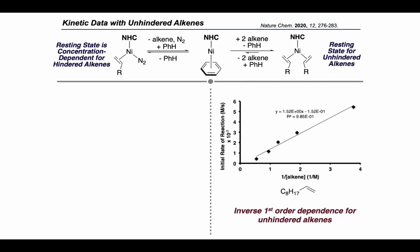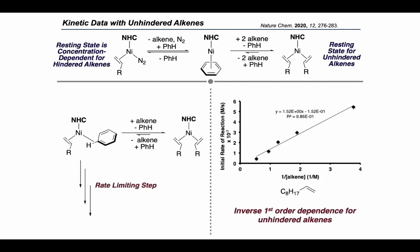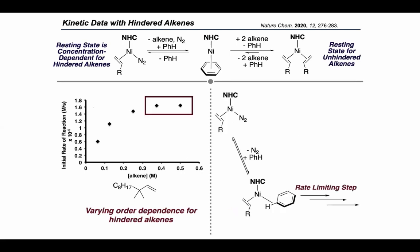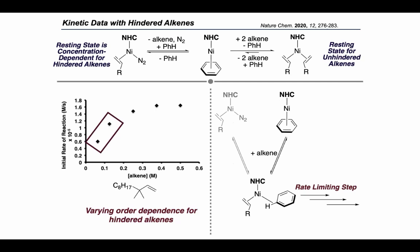The kinetics of this reaction are consistent with the resting states I've shown. With an unhindered alkene, the reaction has an inverse first-order dependence of the rate on the concentration of alkene. This means that the bis-olefin resting state needs to lose an equivalent of olefin, bind arene, and undergo a series of steps which include the rate-limiting step. With the hindered olefin, the situation is more complex and we observe saturation kinetics. At higher concentration of alkene, there is a zero-order rate dependence regime, meaning that the mono-olefin resting state needs to bind arene and undergo the steps including the rate-limiting step. However, at lower concentration of alkene, the resting state is actually the η6-benzene complex and the catalyst needs to bind an equivalent of alkene prior to undergoing the hydroarylation reaction.